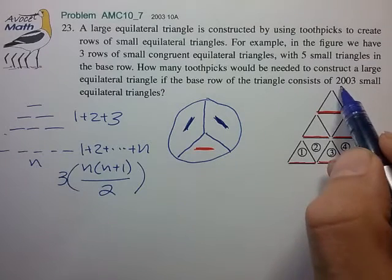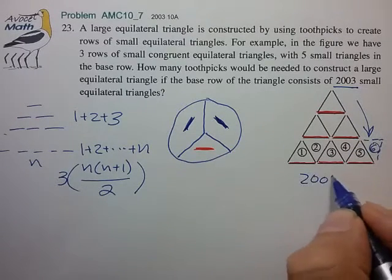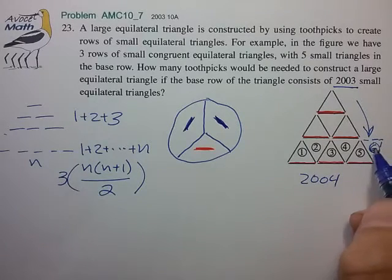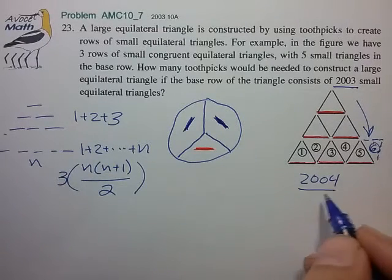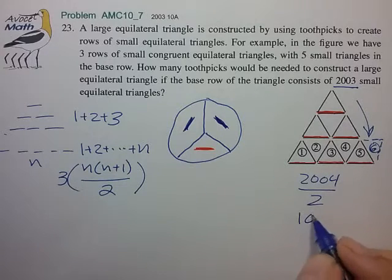So essentially we take this number 2003, add 1 to get to 2004. That's the total number of base triangles including this one additional one. We divide that by 2 to get the number of base toothpicks and that's equal to 1002.